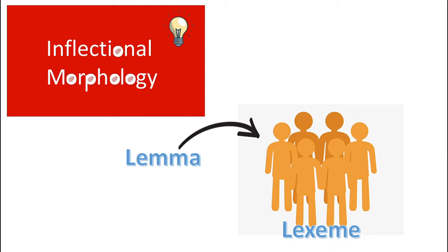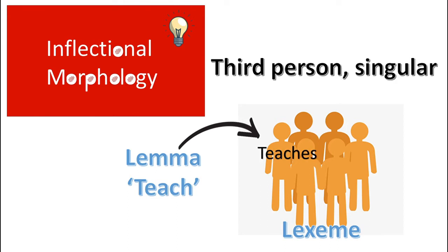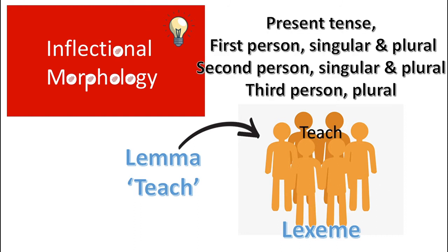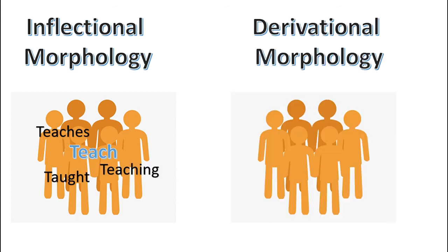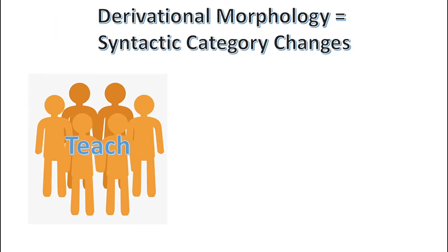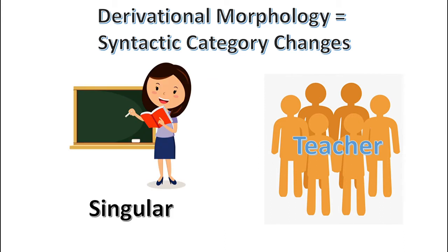For example, the lexeme of the lemma 'teach' contains the third-person singular form 'teaches,' the past tense and past participle form 'taught,' the continuous aspect form 'teaching,' and the form 'teach,' which is the present tense first- and second-person singular and plural, and third-person plural form. While inflectional morphology creates and recognizes forms within a lexeme, derivational morphology involves creating new lexemes. 'Teacher,' for instance, would not be considered an inflected form of 'teach' — it would be the lemma in a new lexeme, containing the singular form 'teacher' and the plural form 'teachers.'